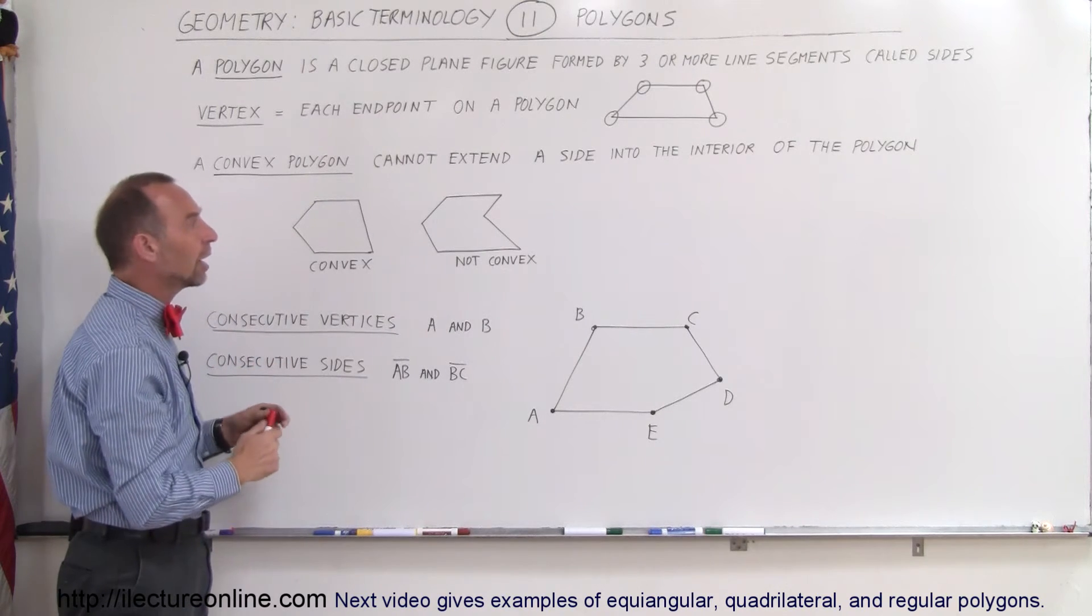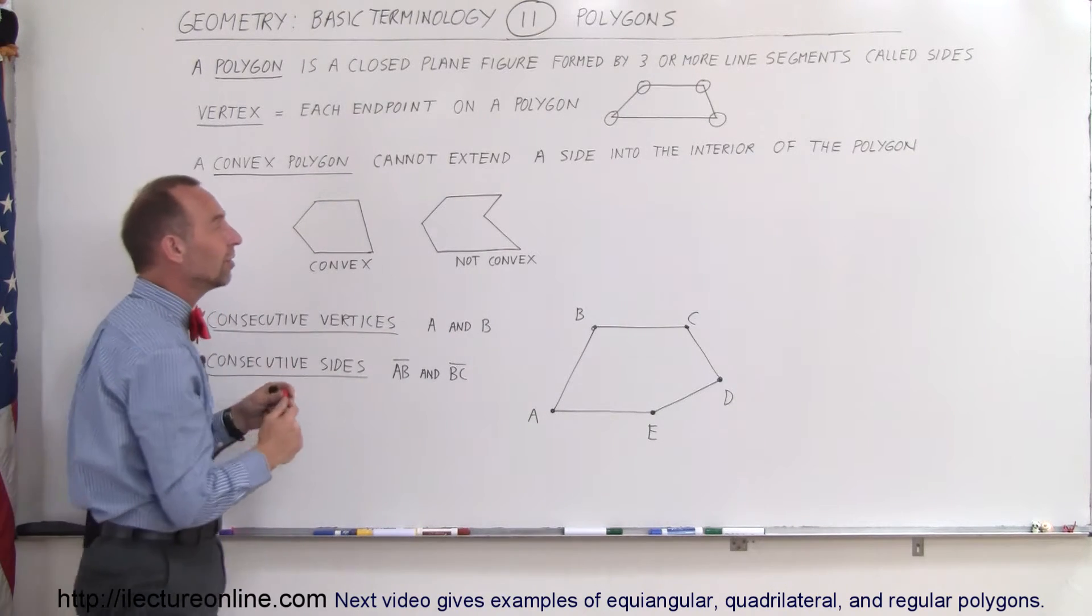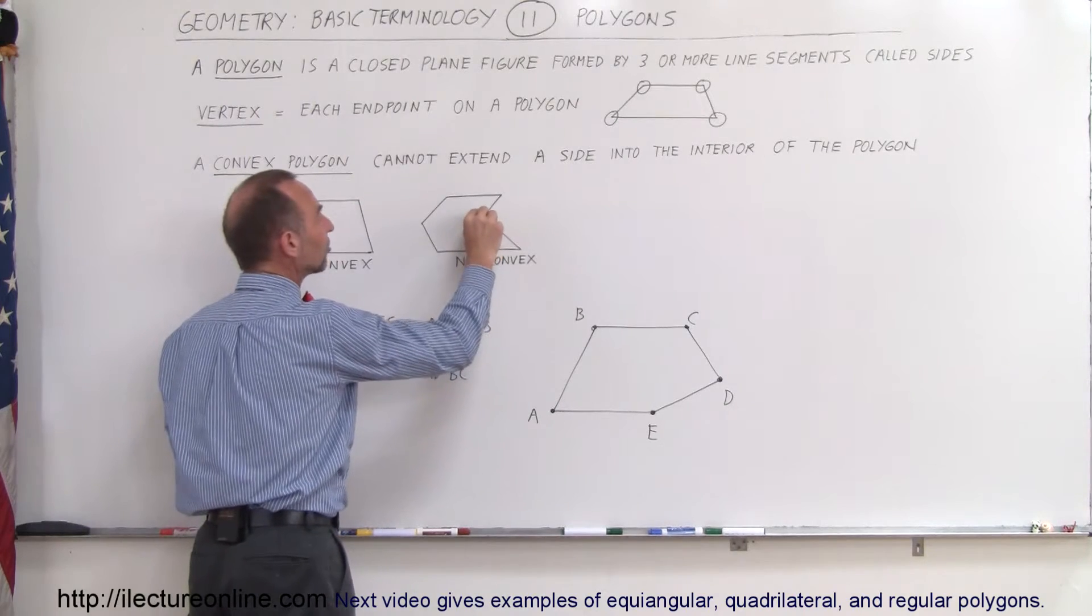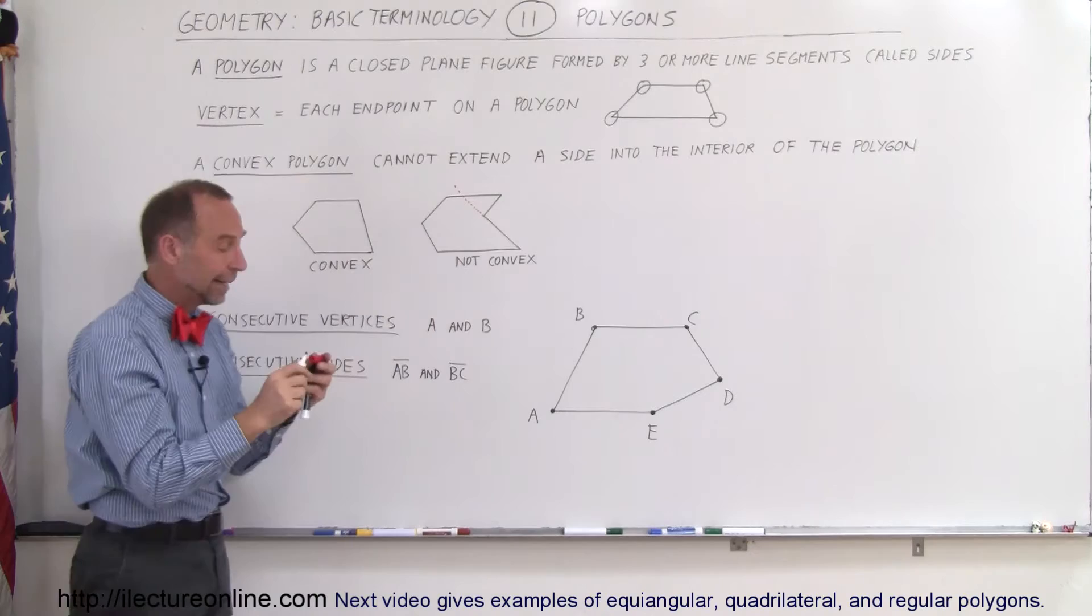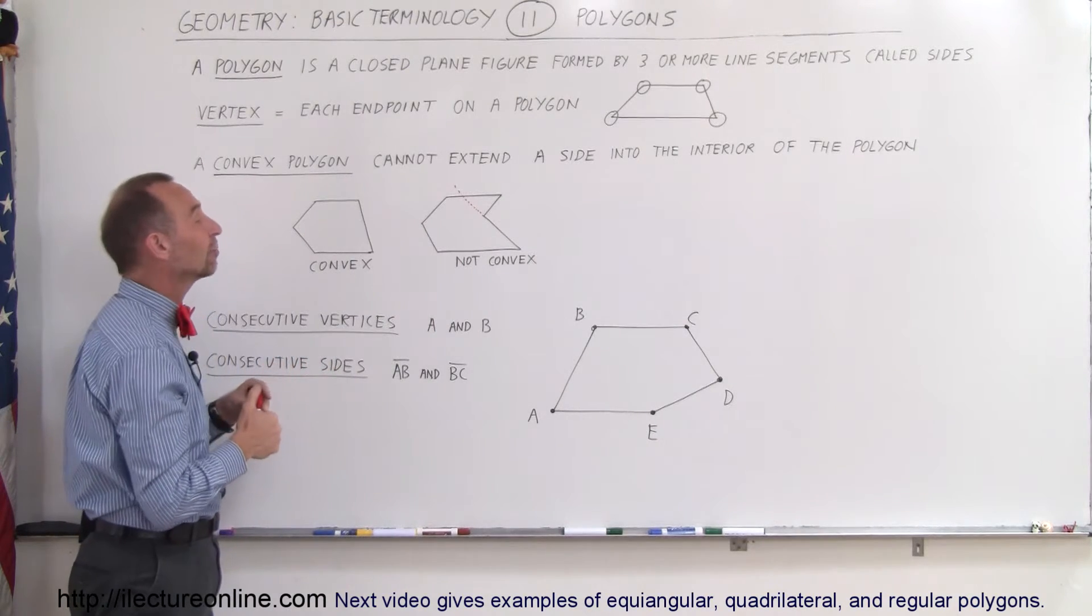The way you know that it's not a convex polygon is that if you take one of the line segments and extend it, and that extension goes through the interior of the polygon, inside the polygon, then it's not a convex polygon.